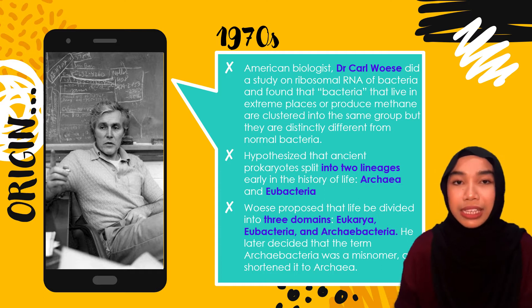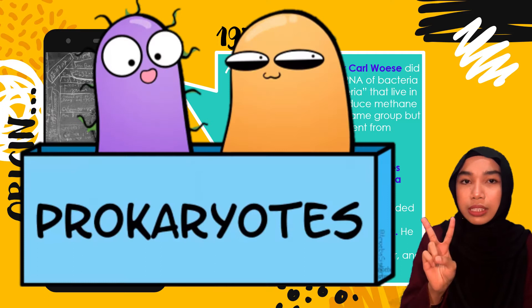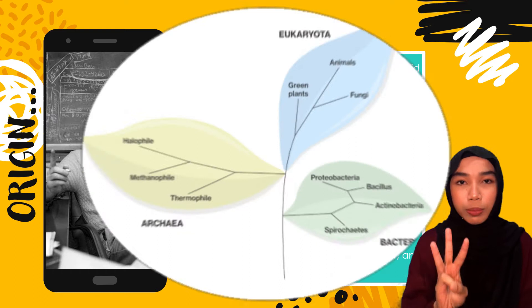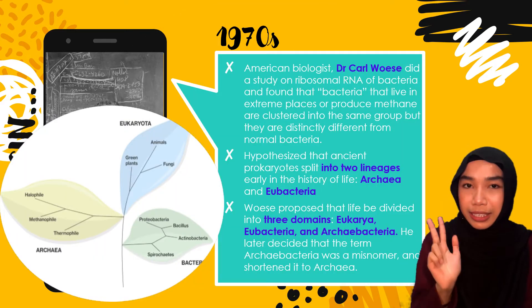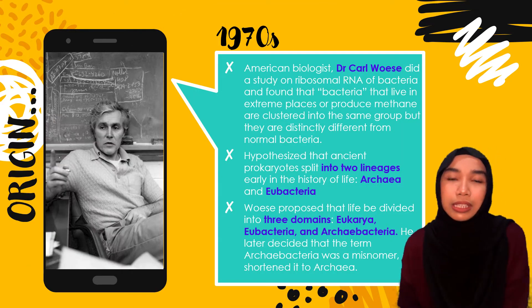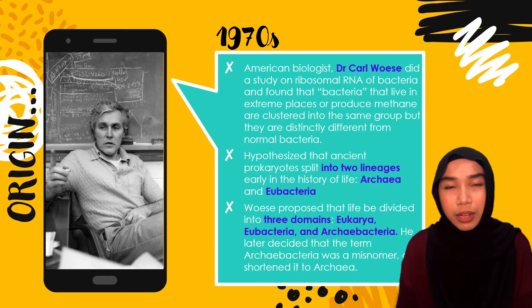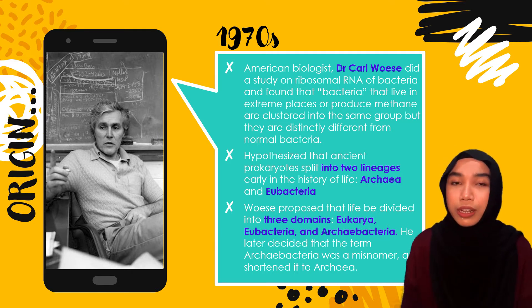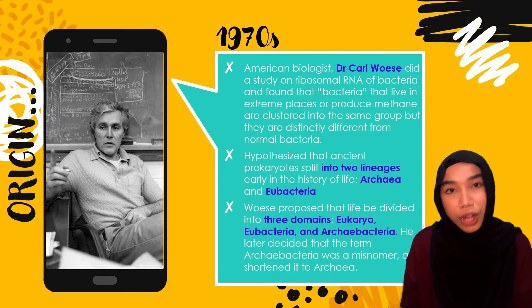Because of these huge differences, he came up with the hypothesis that prokaryotes were split into two lineages only in the history of life, and he proposed that life be divided into three domains: eukarya, eubacteria, and archaebacteria. After a while, he decided that the name archaebacteria was a misnomer, so he shortened it to Archaea. Even though many textbooks and articles still use the term archaebacteria, this term is long abandoned because it is inaccurate — they are not bacteria, they are Archaea.